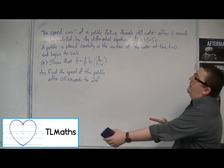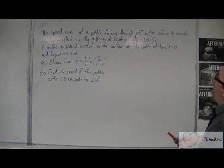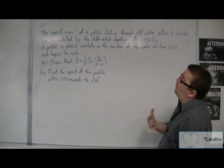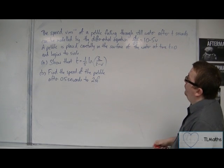Here's another worded problem. The speed v in metres per second of a pebble falling through still water after t seconds can be modelled by the differential equation dv by dt equals 10 minus 5v.